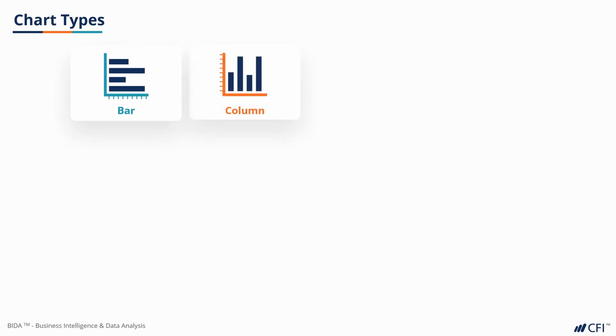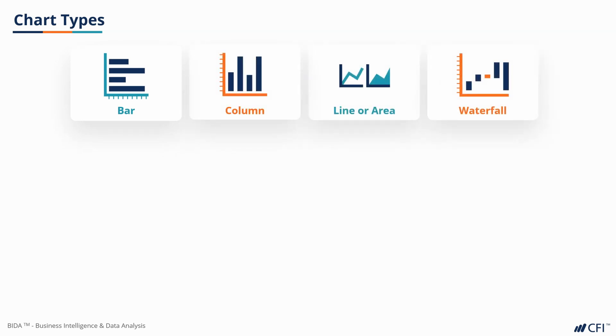When presenting data, one of the most important decisions we have to make is which type of chart to use. We have to pick the chart that communicates our message in the most effective way. This can depend on the type of data, the audience, as well as industry norms. Common chart types like bars, columns, line, area, or waterfalls allow us to show variables across different categories or over time.